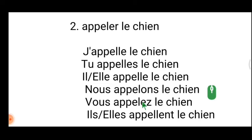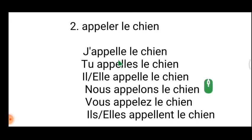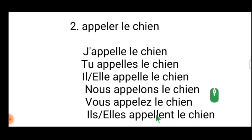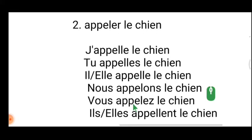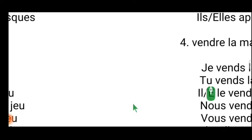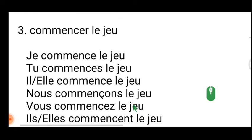So remember: for je, tu, il, ils — two 'l's; for nous and vous — one single 'l.' Take a note of this. Let's move on to the third verb — 'commencer.' I will tell you what is special about this verb: it is a normal ER verb conjugated as -e, -es, -e, -ons, -ez, -ent, but for 'nous' you must introduce the cédille — ç.